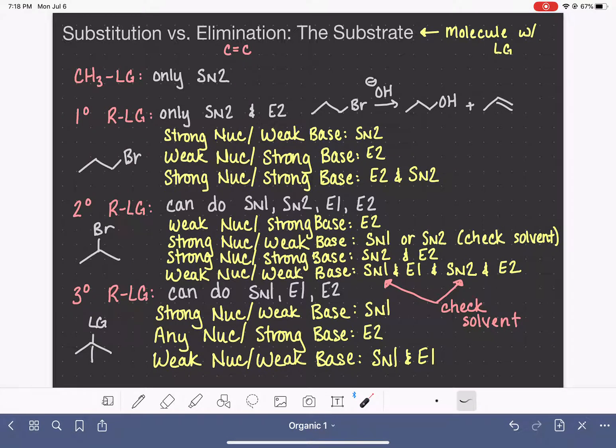Putting all that information together, we were able to say, for example, if you have a primary substrate reacting with a strong base that's also a weak nucleophile, you're looking at the E2 reaction. Or if you have a secondary substrate that's reacting with a strong nucleophile that's also a strong base, you're going to simultaneously do SN2 and E2.